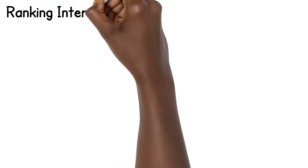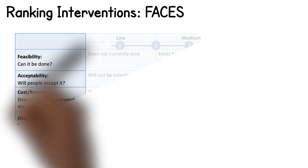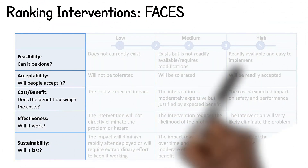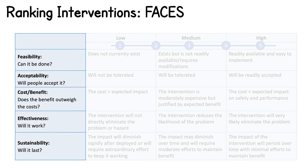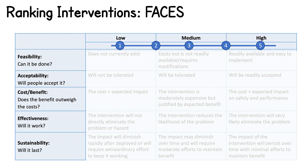FACES stands for feasibility, which means can it be done; acceptability, will people accept it; cost-benefit, does the benefit outweigh the cost; effectiveness, will it work; and sustainability, will it last. We can use FACES to score each of the interventions we develop on these five factors on a scale from 1, very low, to 5, very high.